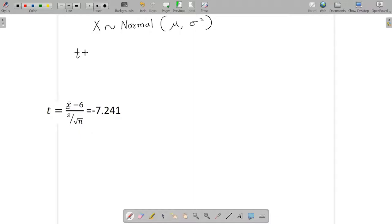This t statistic, t, which is equal to x bar minus mu naught, or maybe mu, divided by s over the square root of n, follows a t distribution with n minus 1 degrees of freedom.